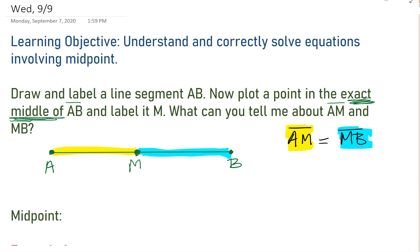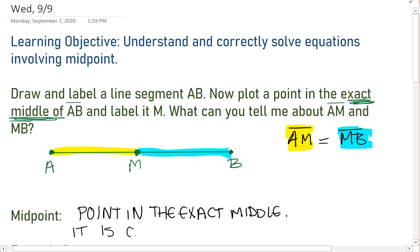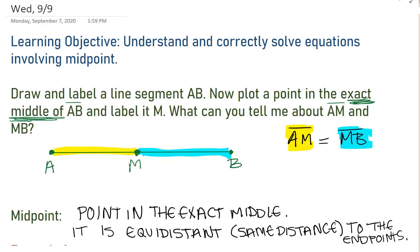The definition of a midpoint is the point in the exact middle. The midpoint is the same distance from either endpoint. And there's actually a word for same distance. We use equidistant. The midpoint is equidistant to the endpoints. It is the same distance from either endpoint.